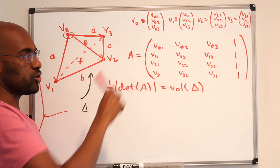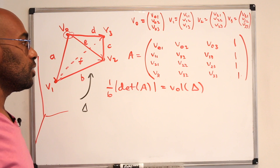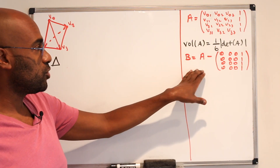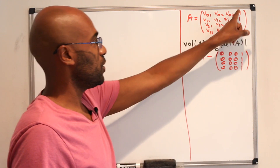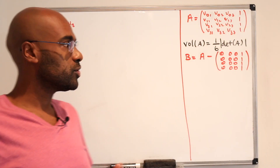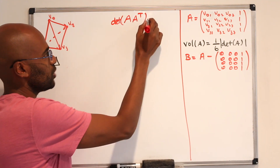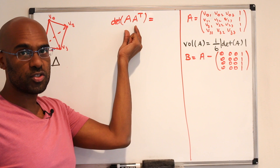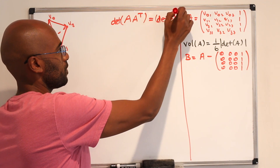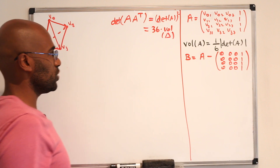We'll work with this specific matrix. We also consider the matrix B, which is the matrix A with its last column replaced by all zeros. The first key thing to consider is AA^T. Its determinant equals det(A) times det(A^T), and since det(A^T) = det(A), this is det(A)². By what we established, det(AA^T) equals 36 times the volume of the tetrahedron squared.